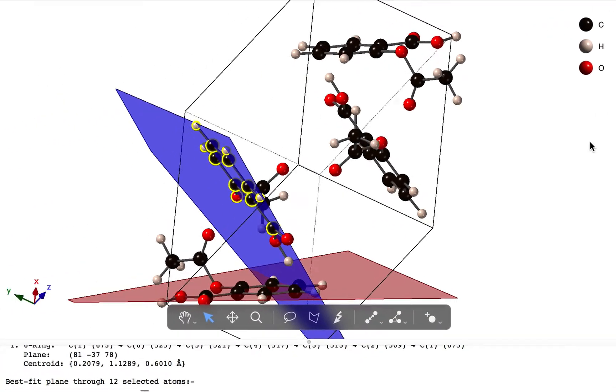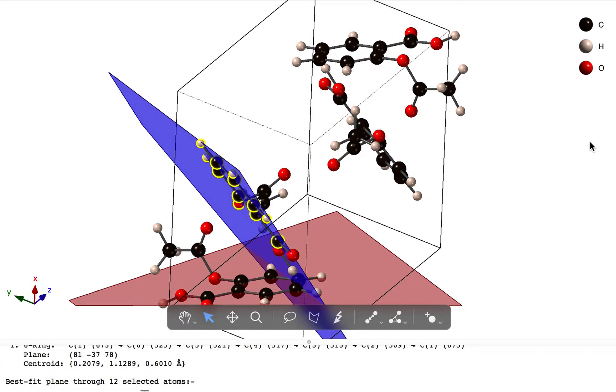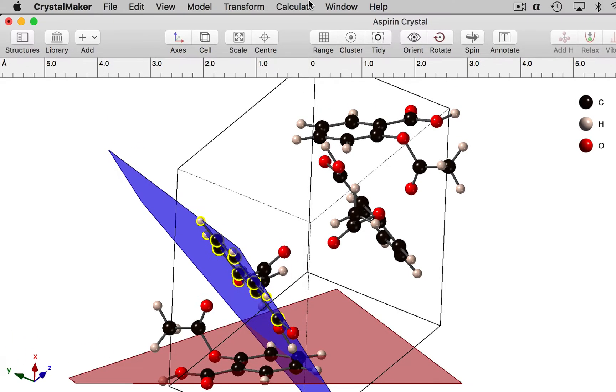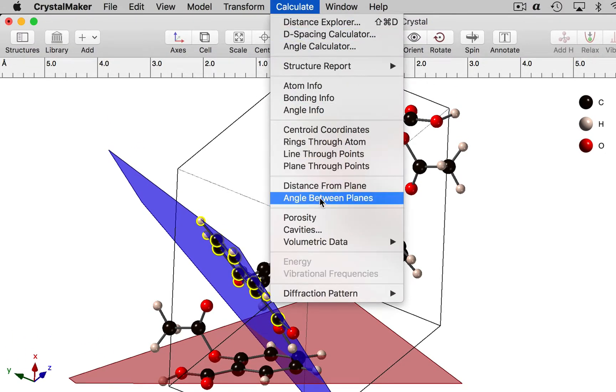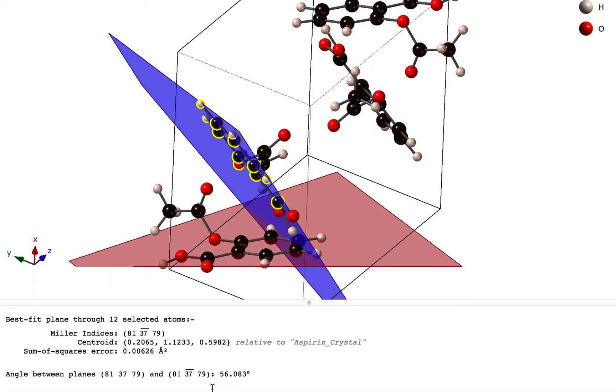Now how do we measure the angle between these two planes? Well it's very easy to do. We go to the calculate menu and we choose angle between planes, and here we have it: 56.1 degrees.